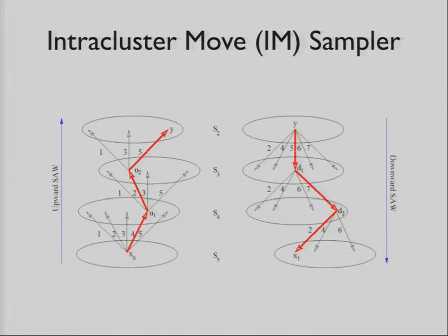The motivating work behind this was the Intracluster Move Sampler, which Firas and Nando came up with and published earlier, that basically draws samples from a constrained state space. The constraint is that all the samples are from a certain hamming distance away from a reference state.